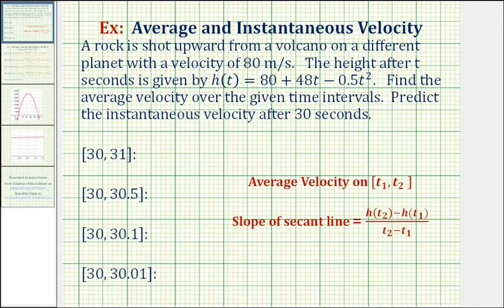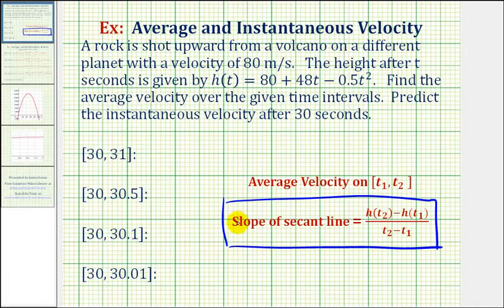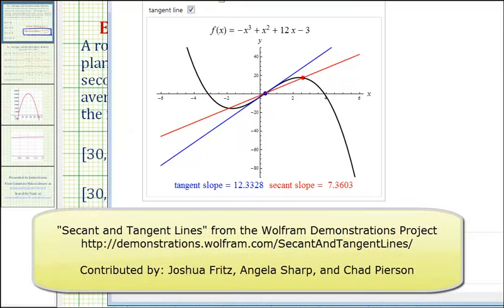To find the average velocities, we can use the slope formula — we'll find the change in the height and divide by the change in time. Before we do this, let's take a look at an animation to get a better idea of how this is going to work.